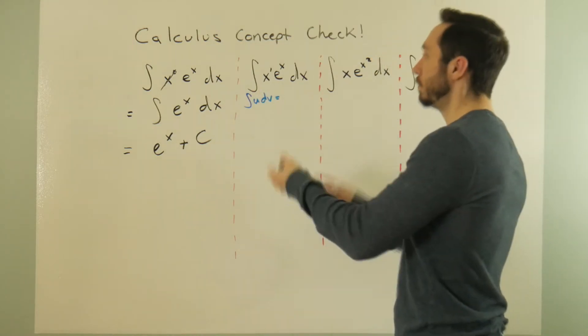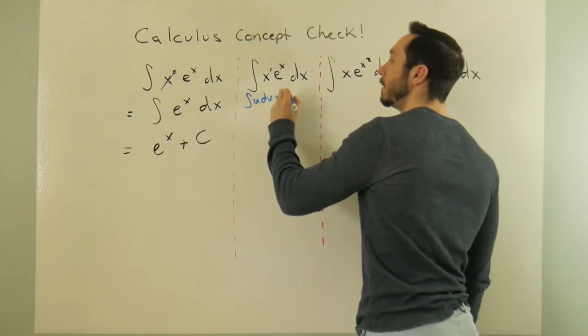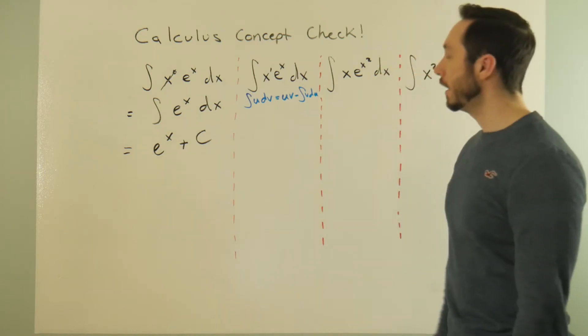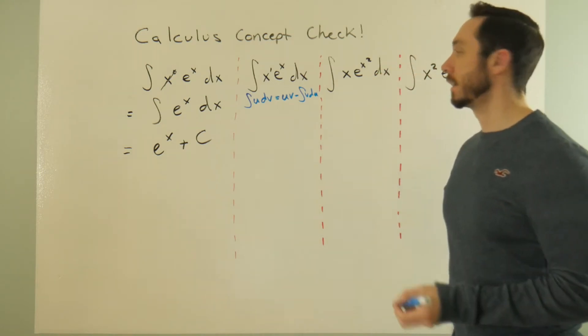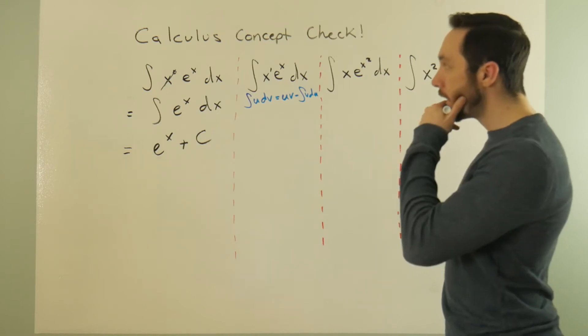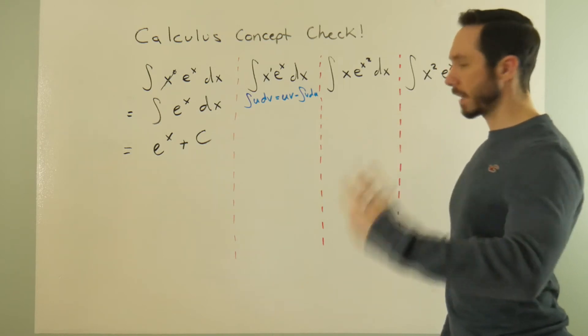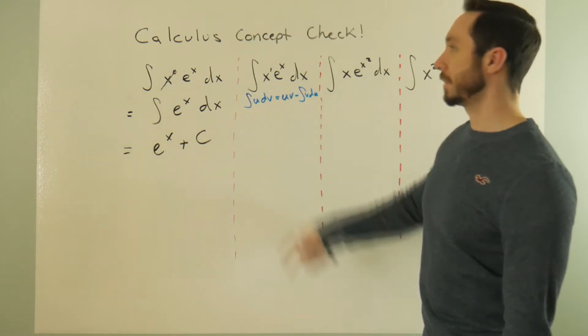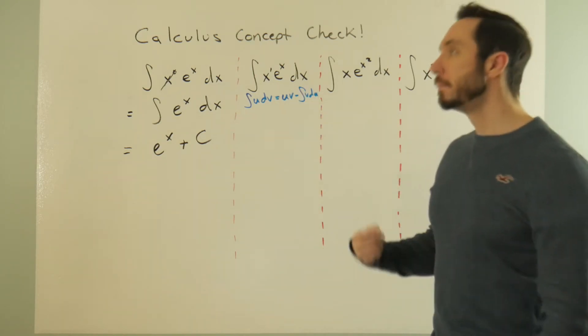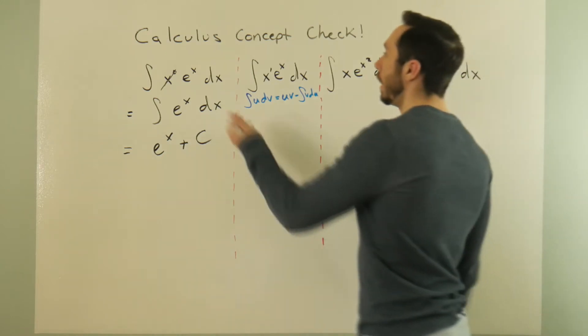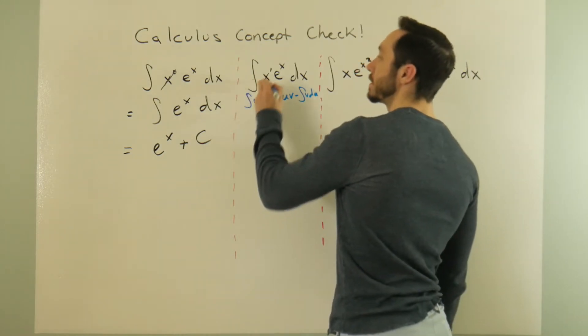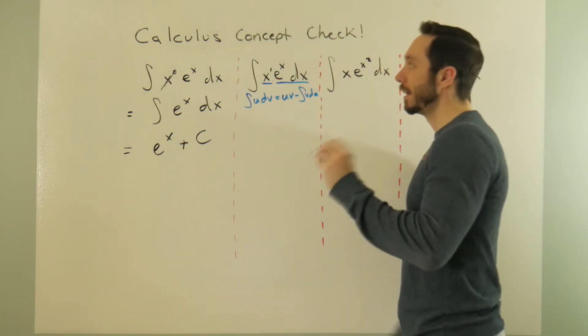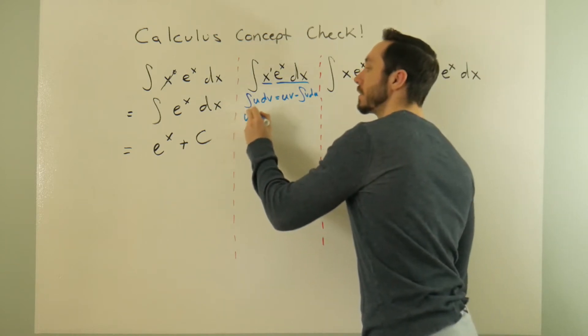If we know that the integral of u dv is a thing, which is what we have, this is going to be equal to uv minus the integral of v du. The idea behind it is to select your u, select your dv. Your u should be something that has a basic derivative, and your dv should be something where it's possible to come up with the antiderivative. In this case, we would make this our u choice and this whole e^x dx our dv. So here, u is going to equal x.